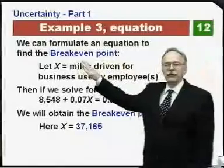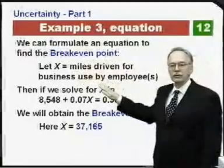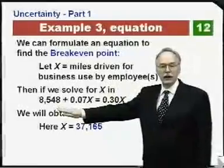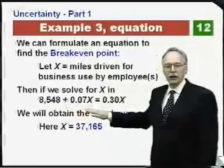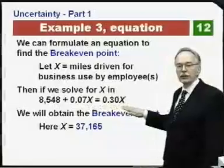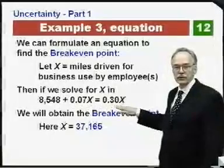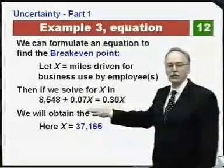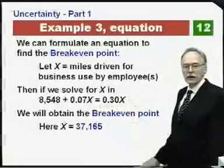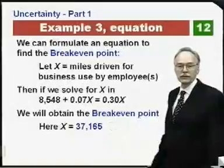We can formulate an equation to find the break-even point. Let the unknown variable be the number of miles driven for business use. Fixed costs ($8,548) plus variable costs ($0.07 per mile) are set equal to what the employer would pay employees for private car use at $0.30 per mile. Solving gives a break-even point of 37,165 miles per year.